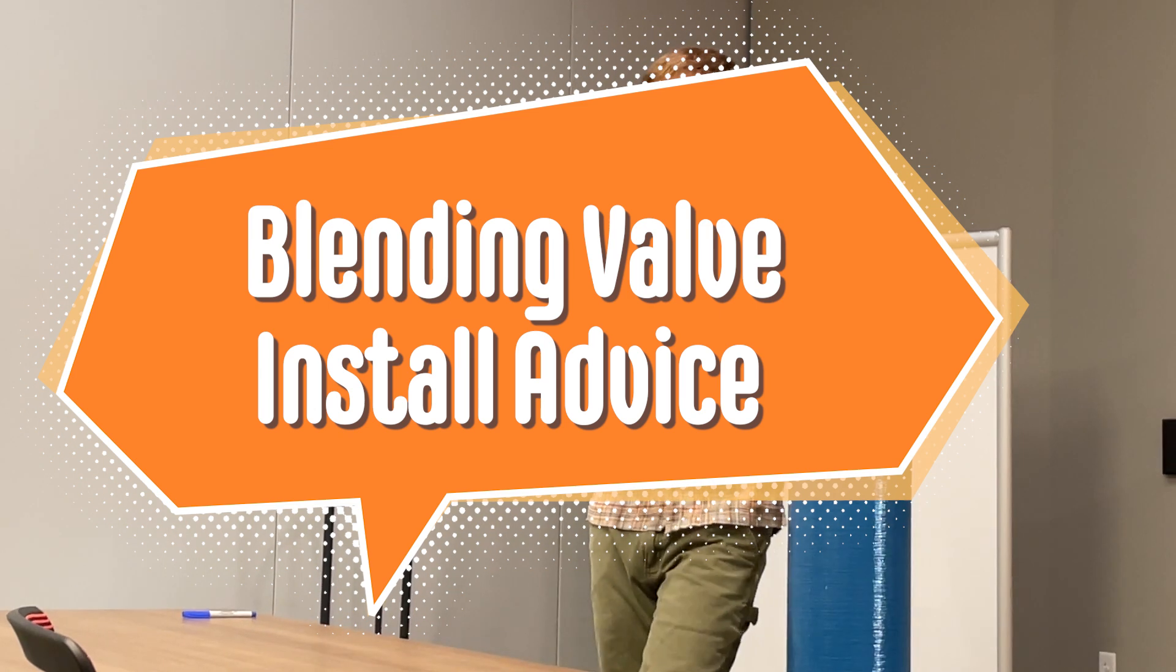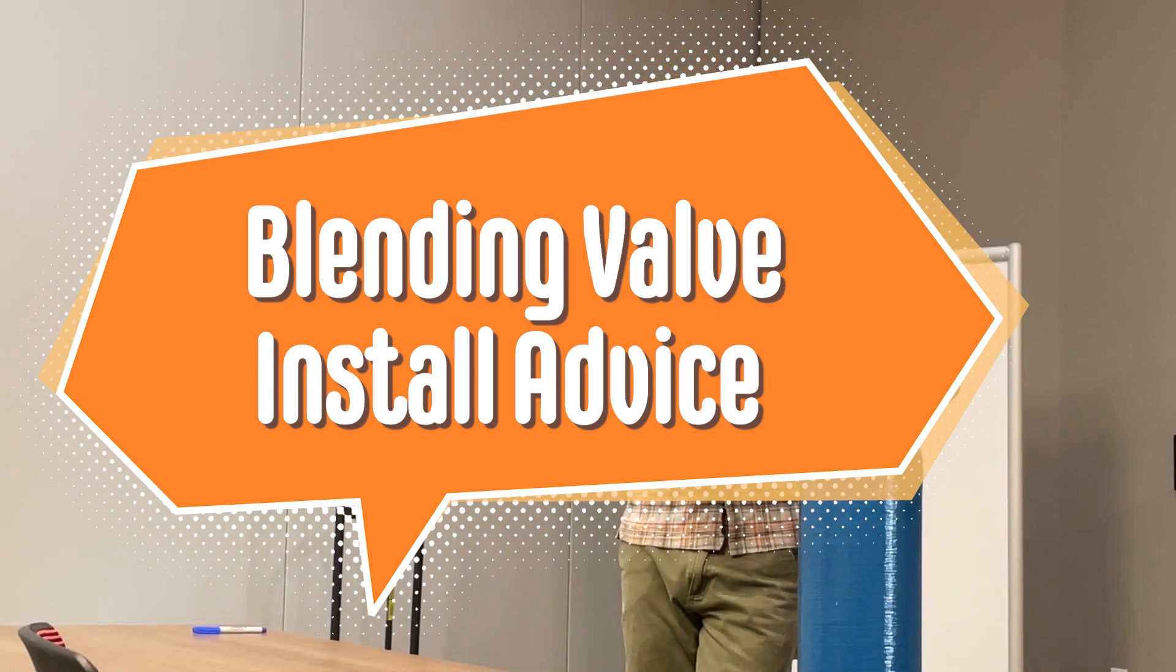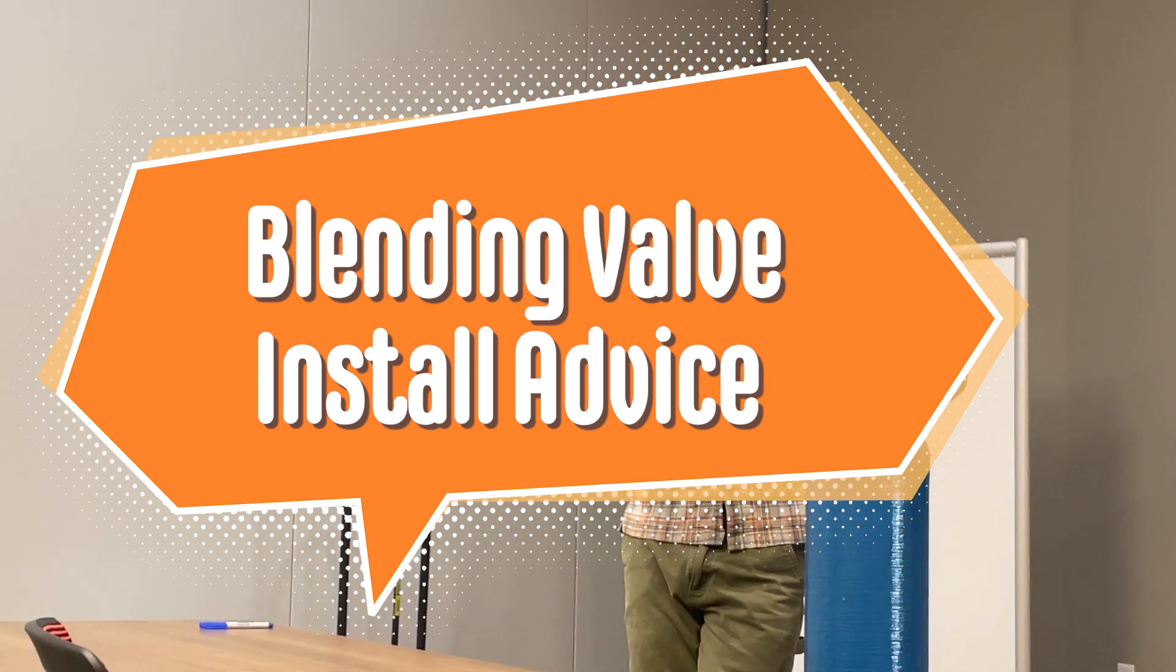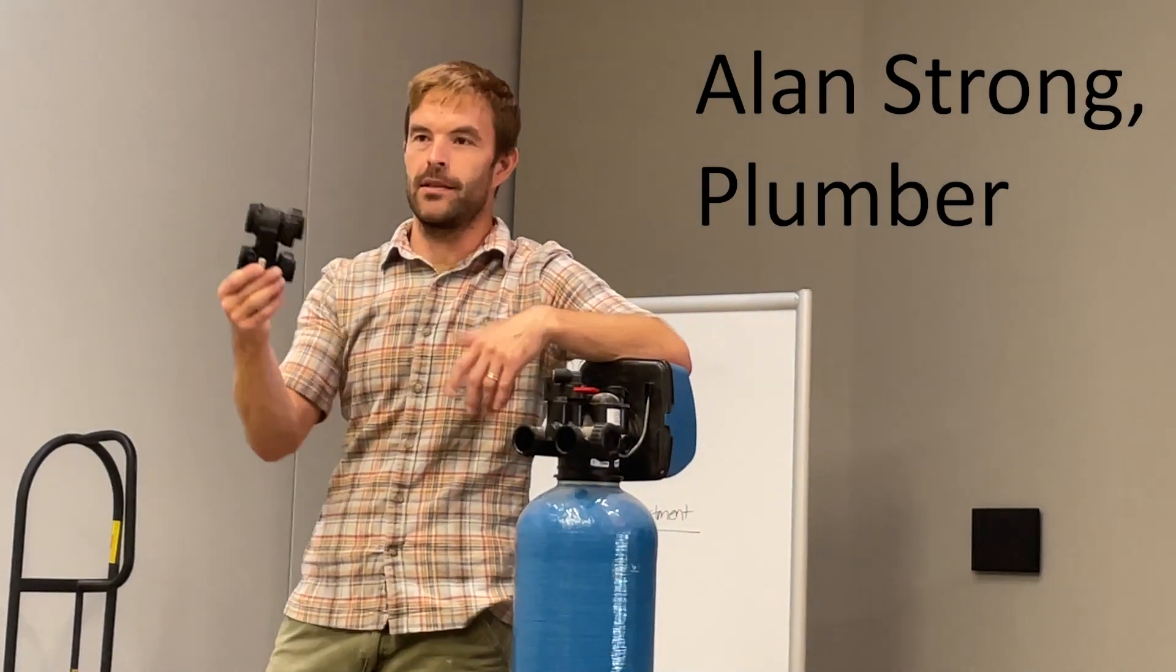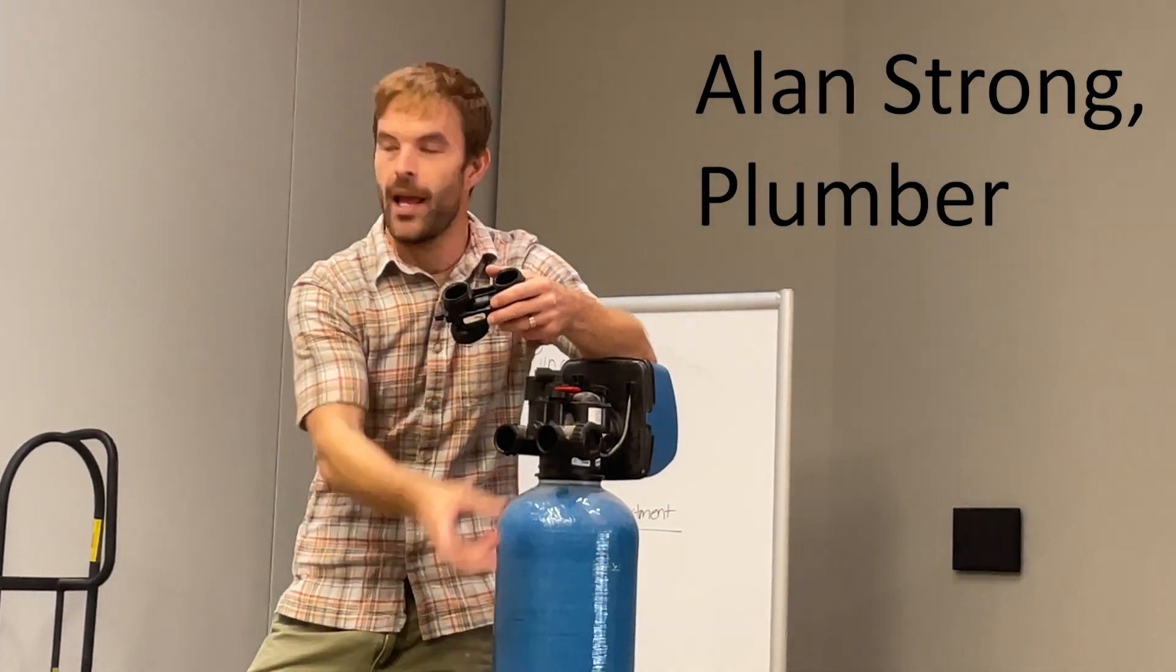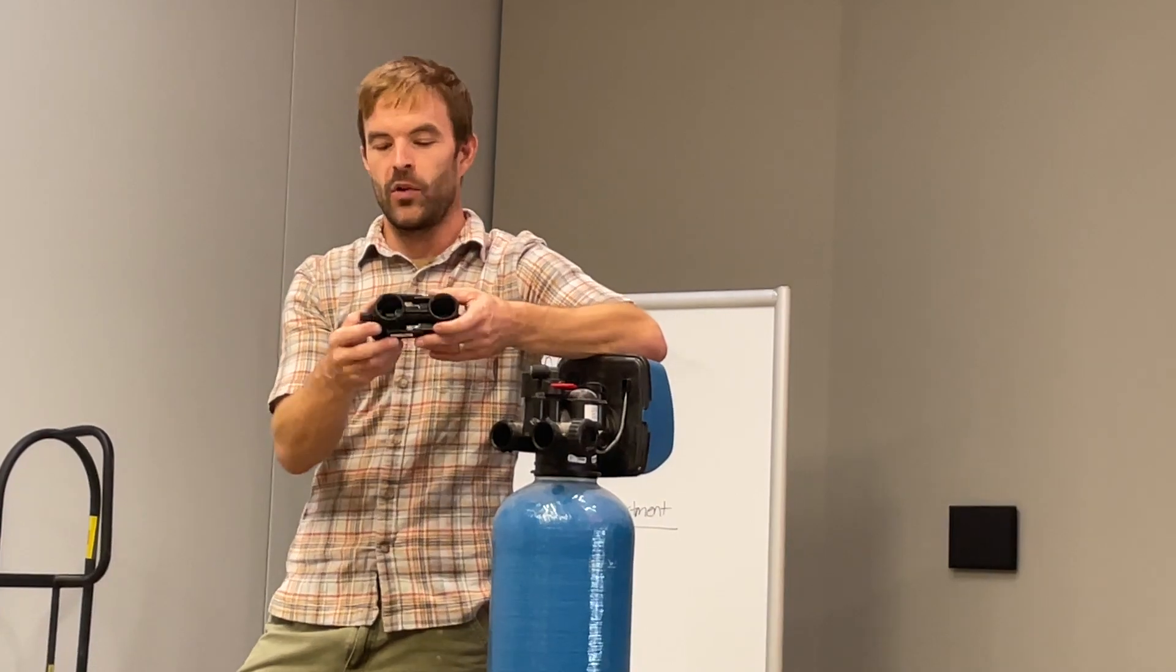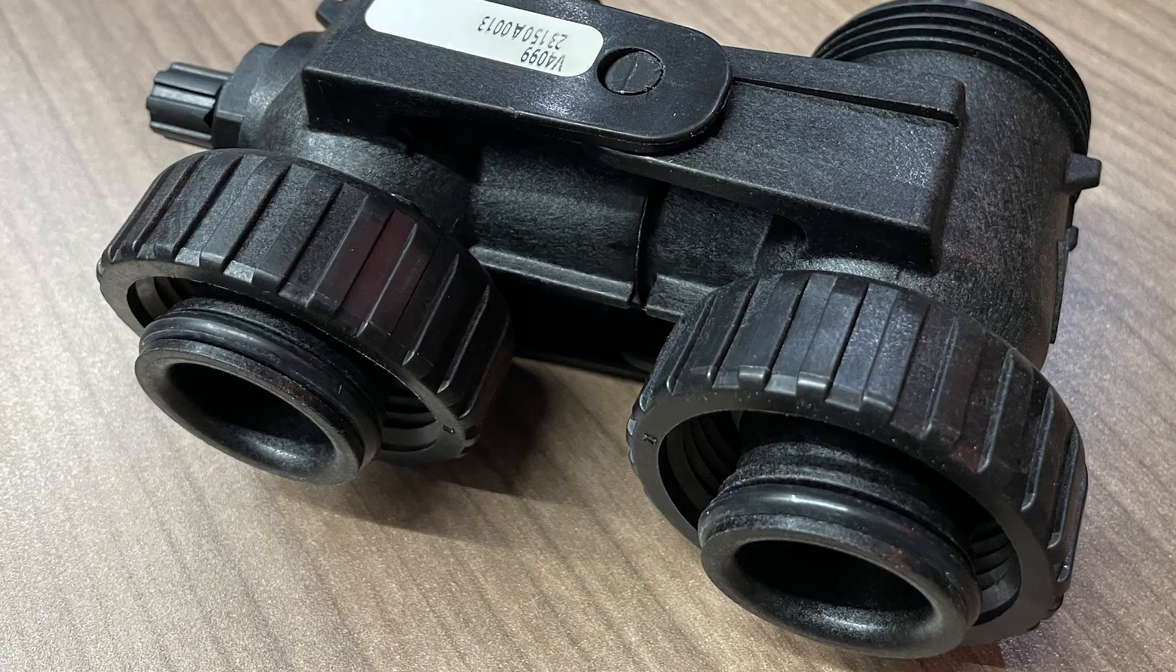This is a chloride reduction device that bypasses water around the softener proportionally. You guys know the components - it's the same as the bypass, the 90s, the check valve. Super simple: o-rings, slip-fit union.